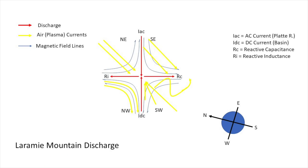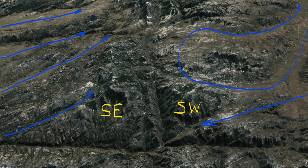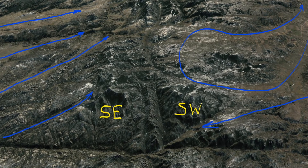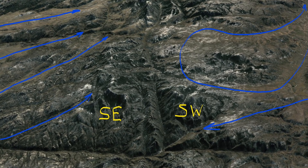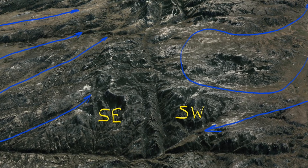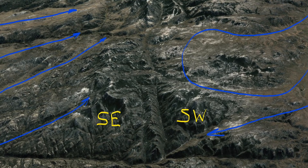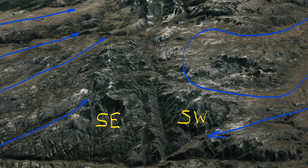Reactive currents express either inductive or capacitive behavior, or a mix, in different parts of a circuit. Therefore, it's not surprising the southern quadrants have blended circuits. What is surprising is how clear the pattern is etched, in spite of all the chaos and violence of this event.